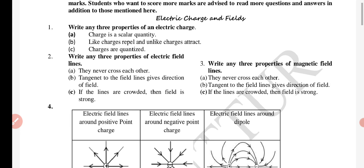In electric charge and fields, three properties of electric charge: it's a scalar, light charge repeal. Any three properties of electric field lines: they never cross each other, tangent to field lines are given direction of field, if the lines are crowded, then field is strong.